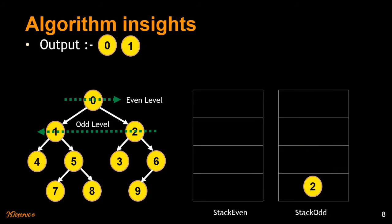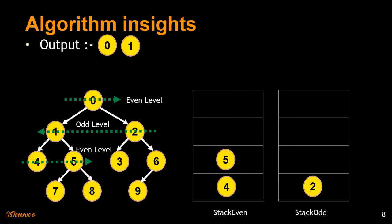When we pop out one, we print it out. One's children are four and five. Since they are at the even level, we traverse from left to right and push four and five into the even stack. Since the odd stack is not empty, we need to empty it before moving to the next level. We pop out two, print it out, and push its children onto the even stack. Two's children are three and six — since they are at the even level, we push three and six into the even stack.